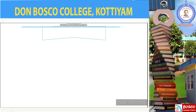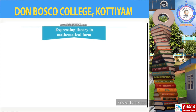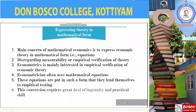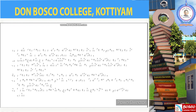The second reason: expressing theory in mathematical form. The main concern of mathematical economics is to express economic theory in mathematical form — that is, in the form of equations — disregarding the measurability or empirical verification of the theory. Econometrics is mainly interested in the empirical valuation of economic theory, and the econometrician often uses the mathematical equations proposed by mathematical economists but puts these equations in a form that they lend themselves to empirical testing. This conversion requires a great deal of ingenuity and practical skill.